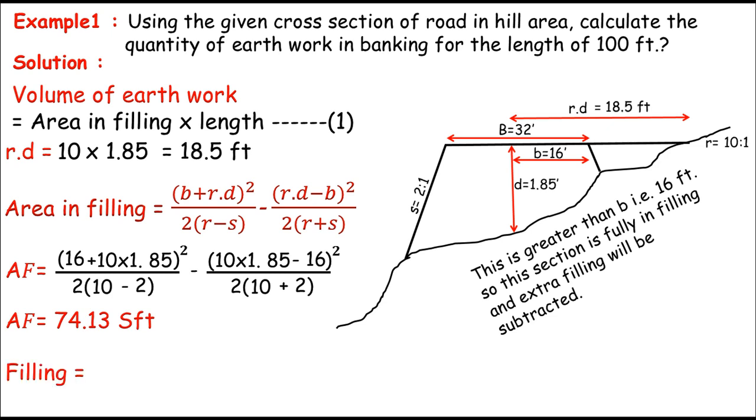Now let me come directly into filling. Or you can say volume of earthwork, which is volume in filling. And that's area in filling times length of the road. So area in filling, that's known. We did this a few seconds ago, which is 74.13 square feet times the length of the road is known, which is 100. And by multiplying these two, which is 74.13 times 100, that's 7413 square feet. And that's it. So this is how we can determine the volume of earthwork in a hill area when it's fully in filling.